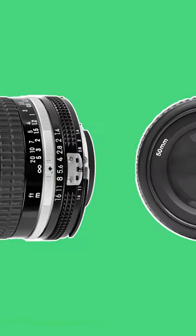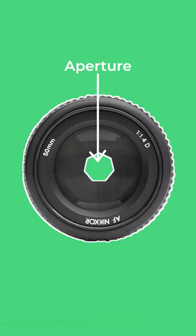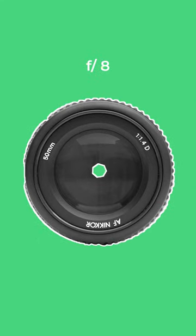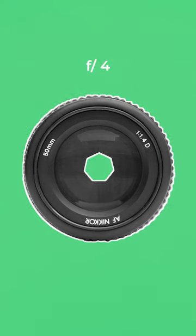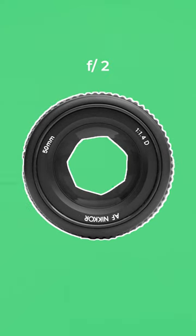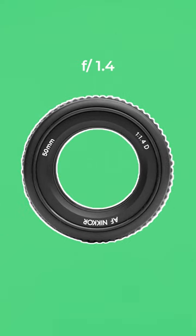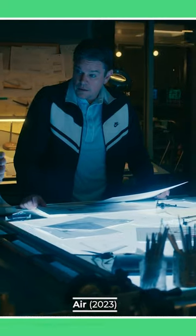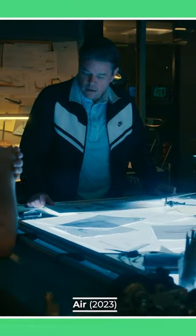F-stop numbers are a measurement of the aperture, or size of the opening on a lens. The higher the f-stop number, the smaller the opening is, while the lower the f-stop number, the larger the opening is. It has two main effects on the image.